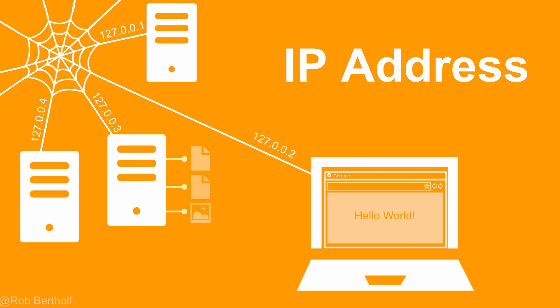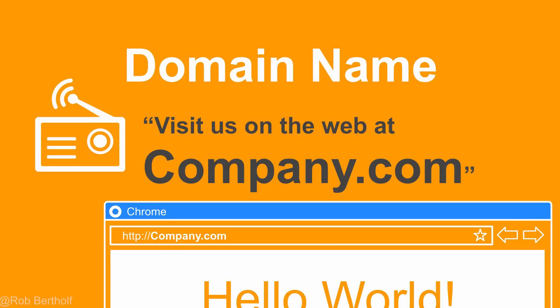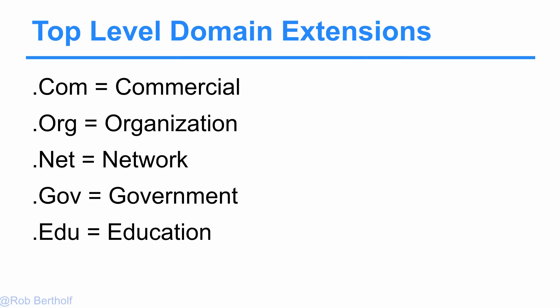Just to keep it simple, your website has an IP address. But nobody would use an IP address to refer to it — we wouldn't run a radio ad saying 'find us at 127.0.0.1,' we wouldn't remember it. So we use company.com — that's called a domain name. The .com is what's called a top-level domain extension, referring to a commercial website. Other examples are .org for organization, .net for network, .gov for government, and .edu for education, plus a host of new ones that have come up over the years.